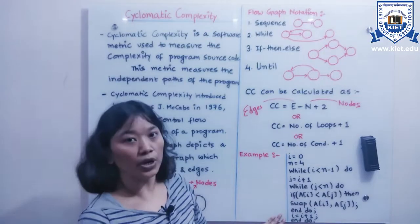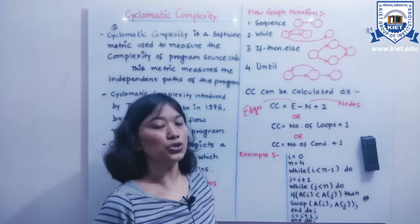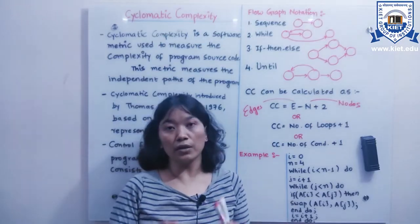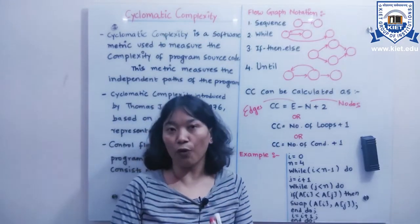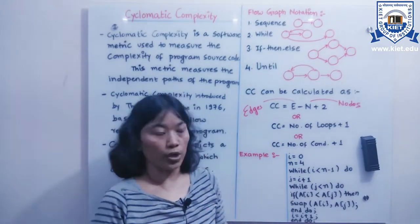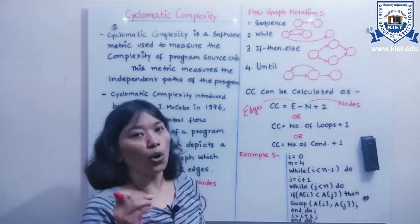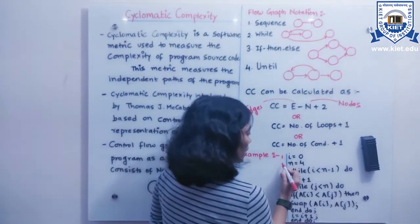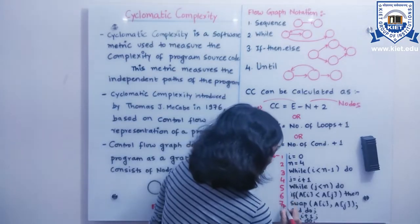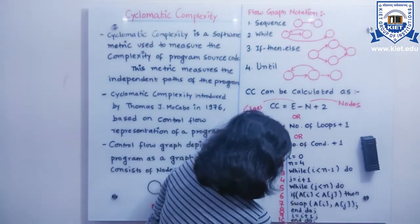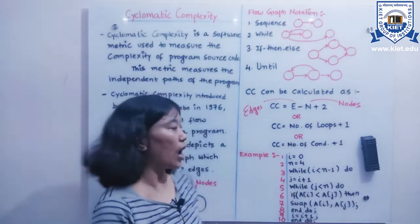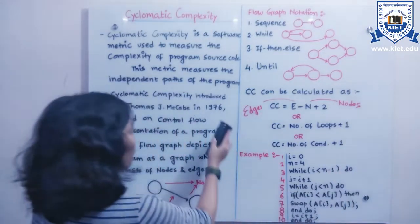Let's take a sample code to calculate cyclomatic complexity. The first step is to draw the control flow graph of the program. To do this, I first number all the statements of the source code — writing the number to the left of each statement. As you can see, this sample source code has 10 statements. Now I will draw the control flow graph.